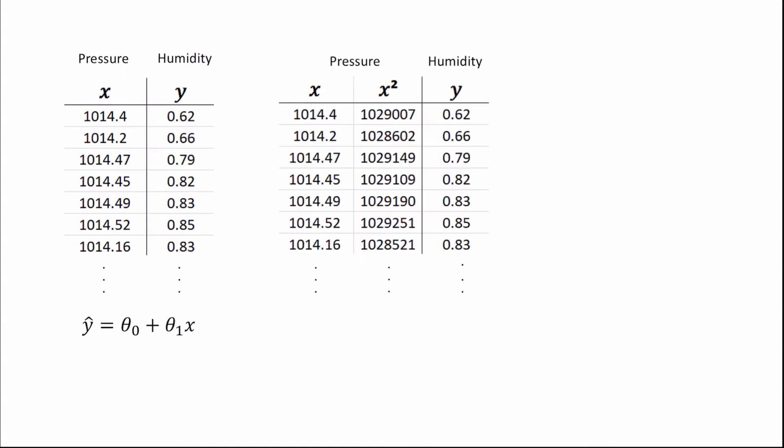However, if we add x squared to our data, squaring all of these pressure values, we can now produce a regression model that looks like this. Adding this x squared to our data enables us to check, is there a quadratic relationship within our data? That is, does our data follow a bowl-shaped relationship?